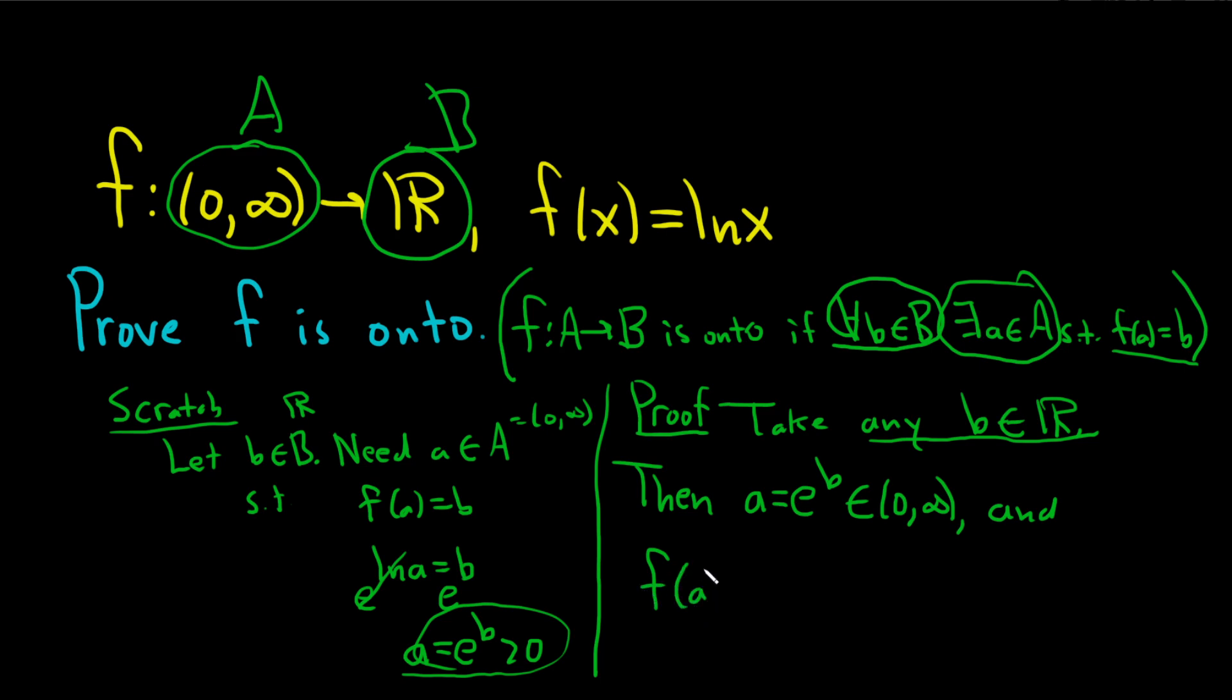So f(A), well that's equal to the natural log of A. But what is A? Well A is e to the b, so you have the natural log of e to the b. But we all know that's b, and so that completes the proof.